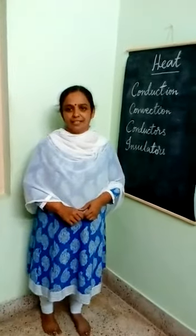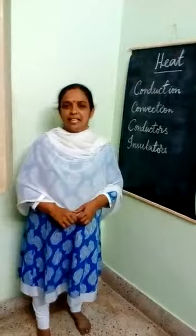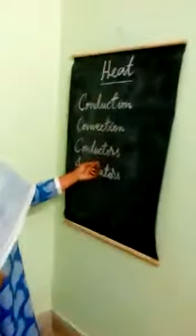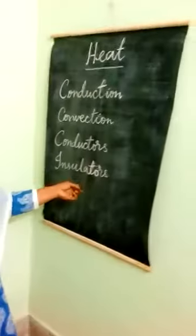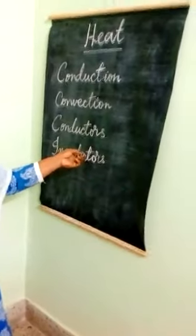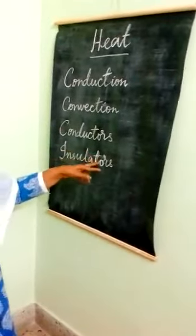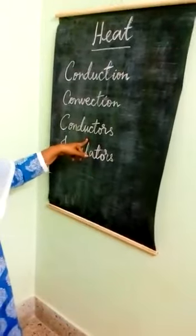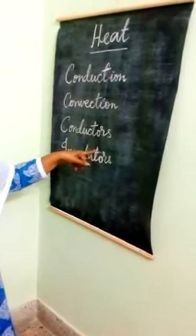Good morning children. In the previous class we learnt about what are conductors and what are insulators. Conductors are those materials which allow heat to pass through them. Examples of conductors are iron, aluminium, copper etc.